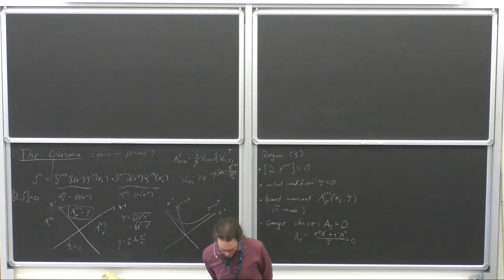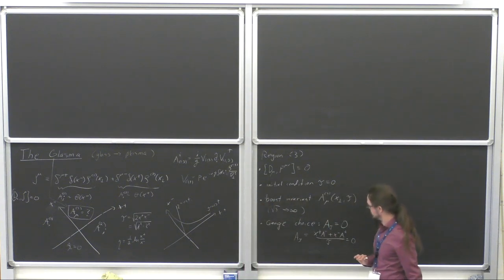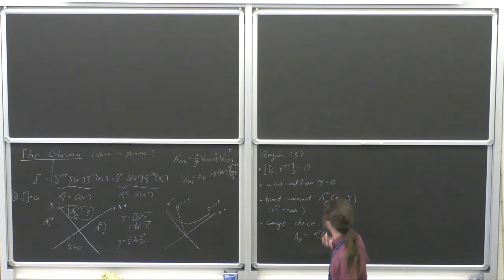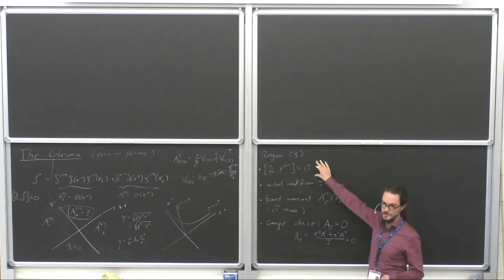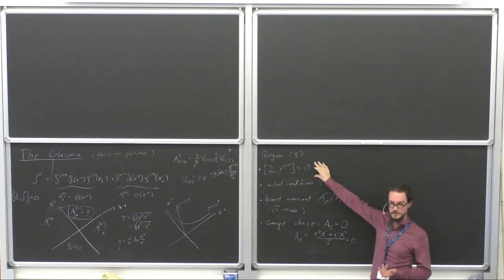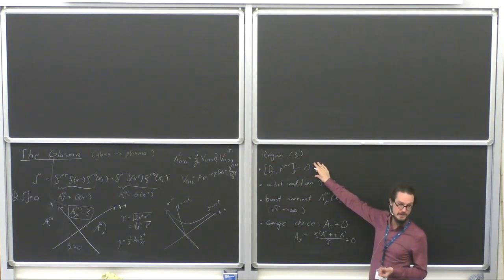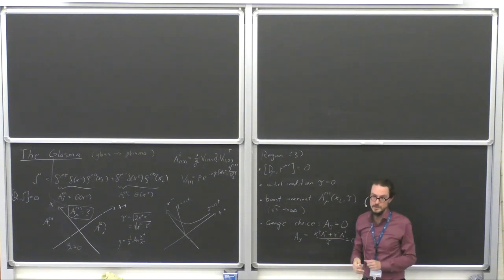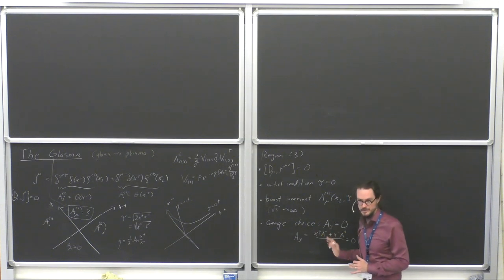This gauge choice allows us to find the initial condition for the fields and solve this equation and forget about the currents. In some other gauge you could not do this as easily, but in this gauge you can. There's another advantage: this is a temporal gauge choice, and this equation is nonlinear so we are not going to be able to solve it analytically fully. We can solve it either perturbatively or numerically. The temporal gauge allows you to write this equation of motion in a gauge invariant way and solve it on the lattice.